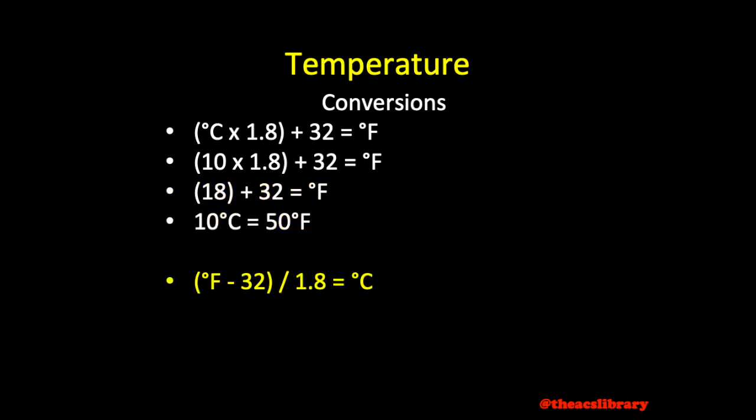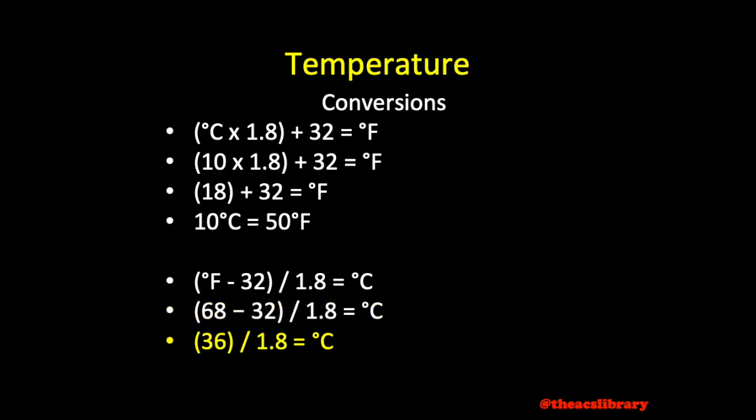To convert a temperature from Fahrenheit to Celsius, simply do the opposite. Here we have a value of 68 degrees Fahrenheit. Minus 32 is 36, divided by 1.8 is 20 degrees Celsius. The same formula is applied to negative values in Fahrenheit and Celsius.